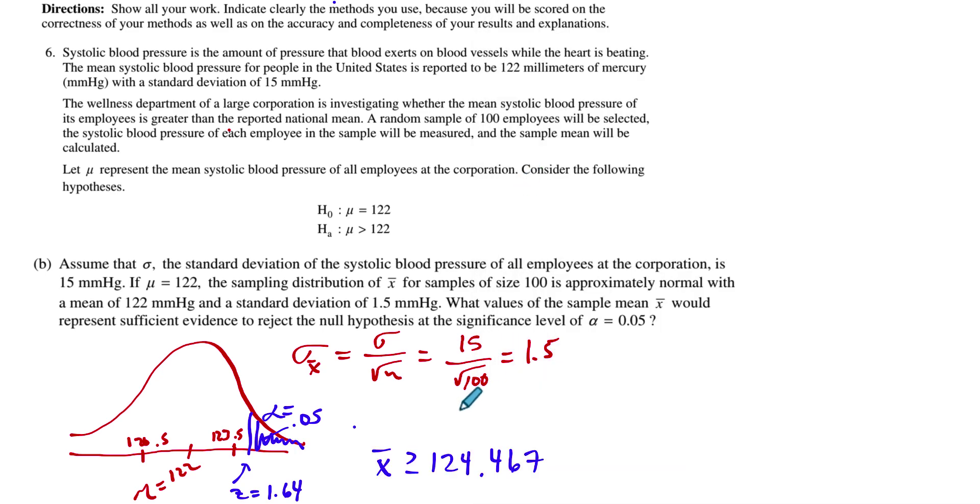Let's write that down. So I make a statement here that x-bar has to be greater than or equal to 124.467. When I was doing this problem by myself, I did not include the z-score, and it's only because I went to the scoring guide and noticed they also want that z-score. That's why I made that middle step of finding out what that z-score is.